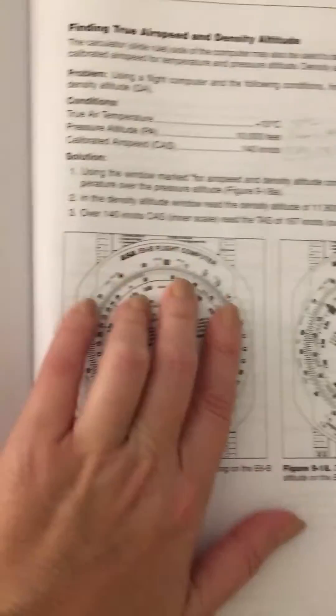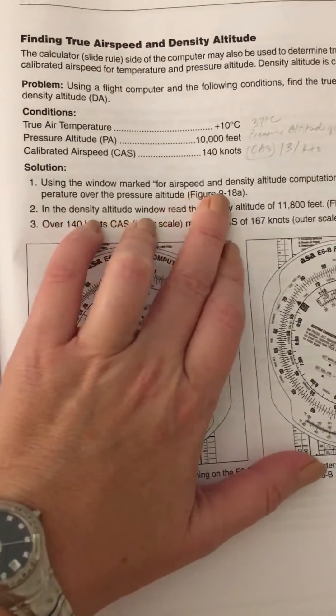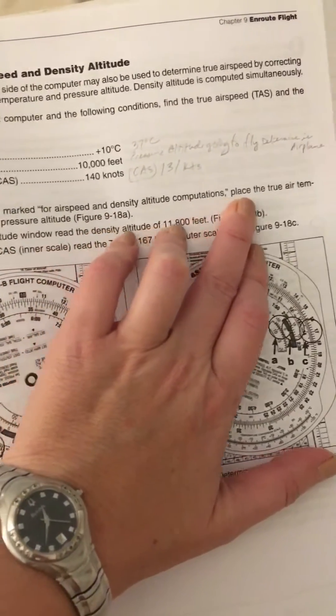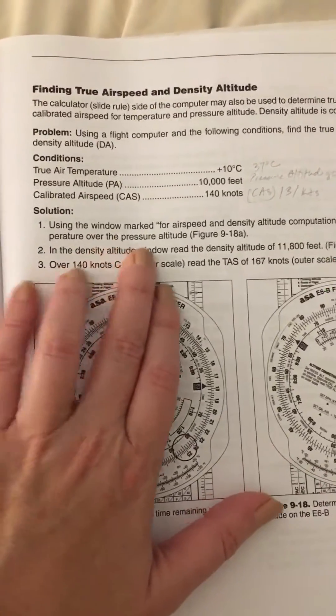The first thing we're going to do is use the window marked airspeed and density altitude computations, and place the true air temperature under the pressure altitude.